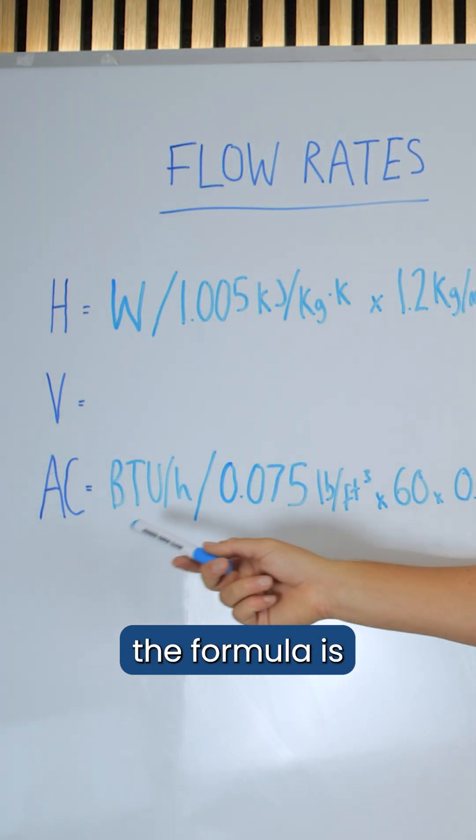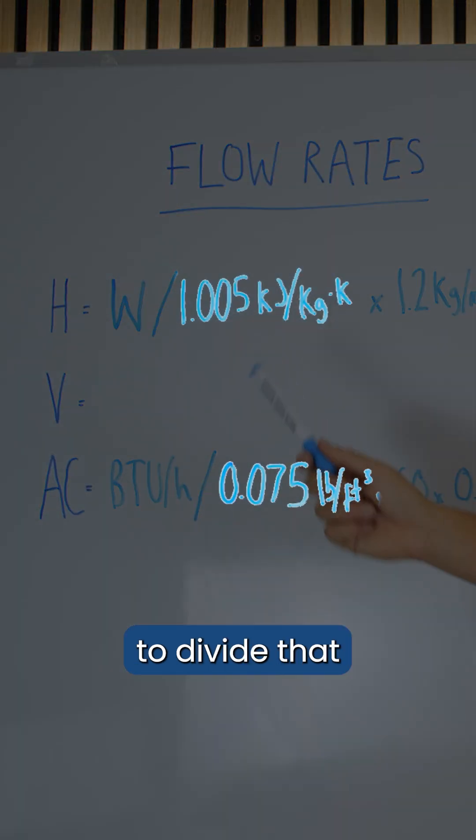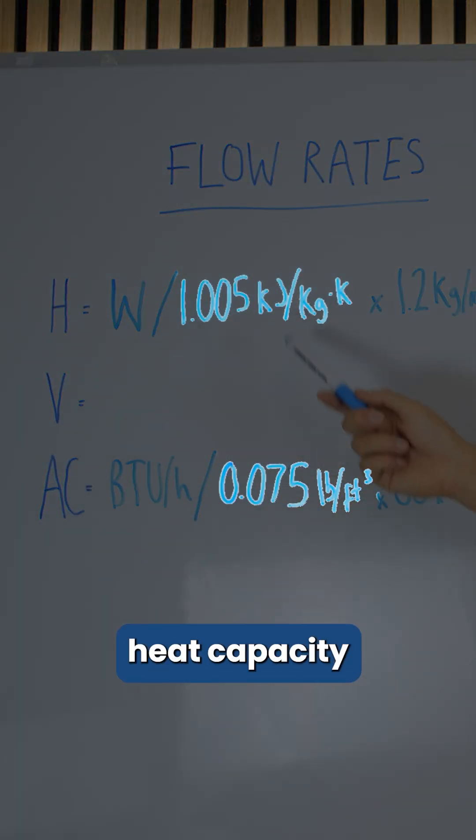So that is the first part of the formula: what is your load? And then we're going to divide that by the specific heat capacity of the air.